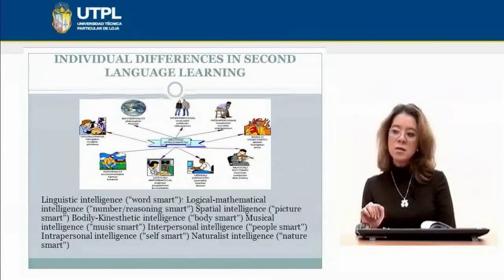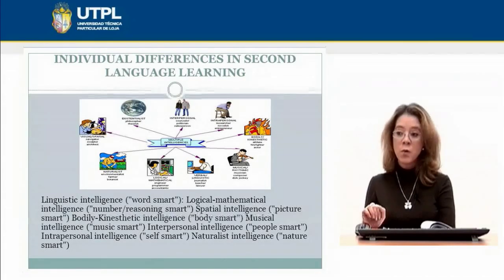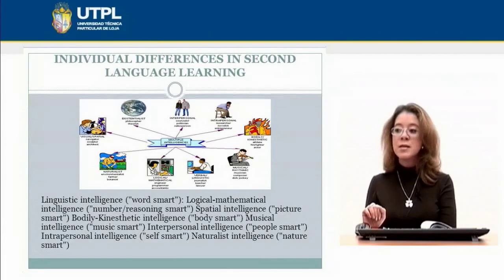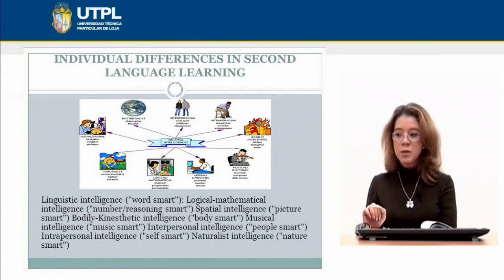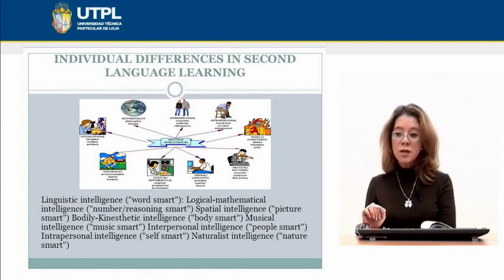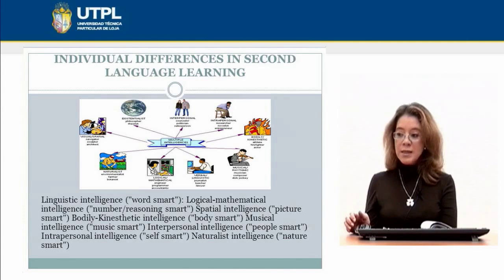Gardner's eight intelligences are: linguistic intelligence — word smart; logical-mathematical intelligence — number and reasoning smart; spatial intelligence — picture smart; bodily-kinesthetic intelligence — body smart; musical intelligence — music smart; interpersonal intelligence — people smart; intrapersonal intelligence — self smart; and naturalistic intelligence — nature smart.